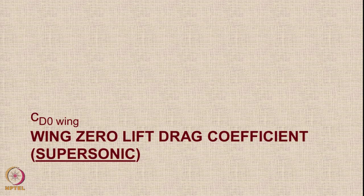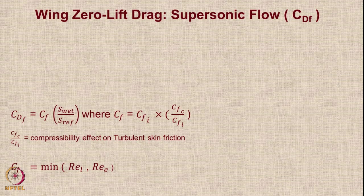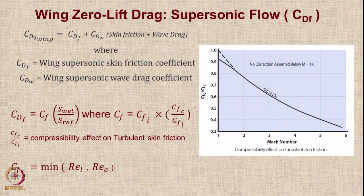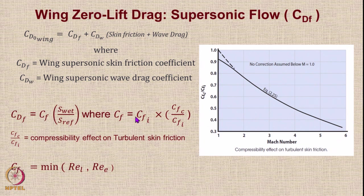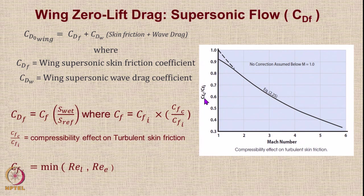When it comes to supersonic aircraft, to calculate CDO wing you use a specific procedure. CDO wing is again CDF plus CDW, where CDF is the wing supersonic skin friction coefficient and CDW is the wing supersonic wave drag coefficient. CDF = CF × Swet/SF, where CF = CFI × (CFC/CFI), which accounts for the compressibility effect on turbulent skin friction. CFI is calculated based on the minimum Reynolds number — either the cutoff value or the standard value. The ratio CFC/CFI can be obtained for various Mach numbers from the graph.